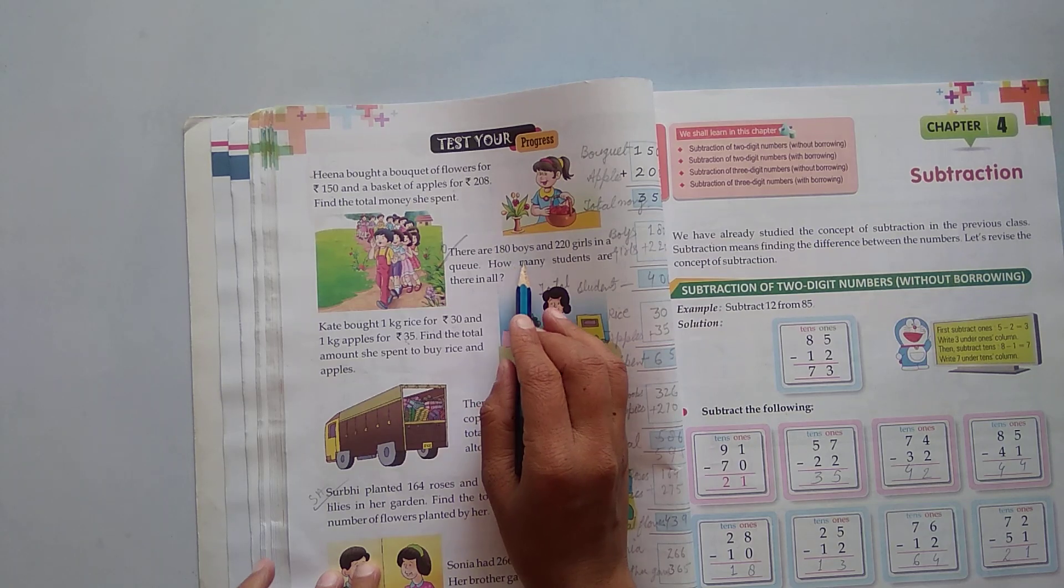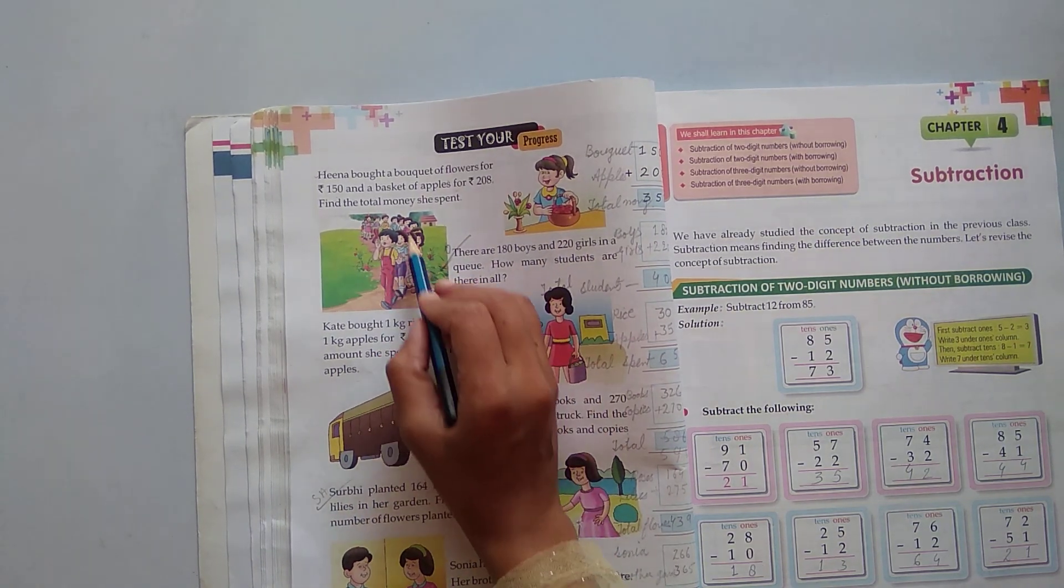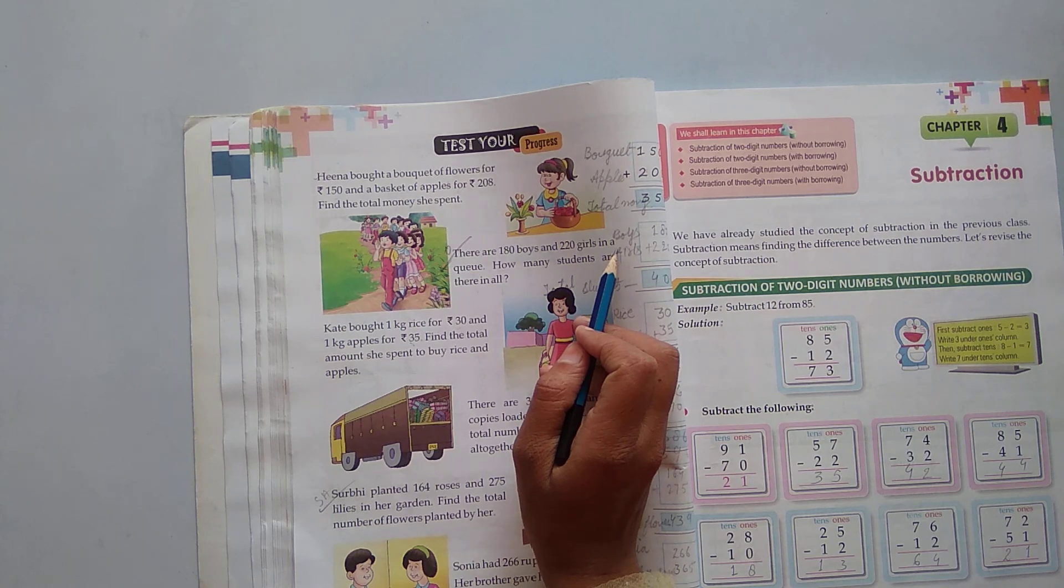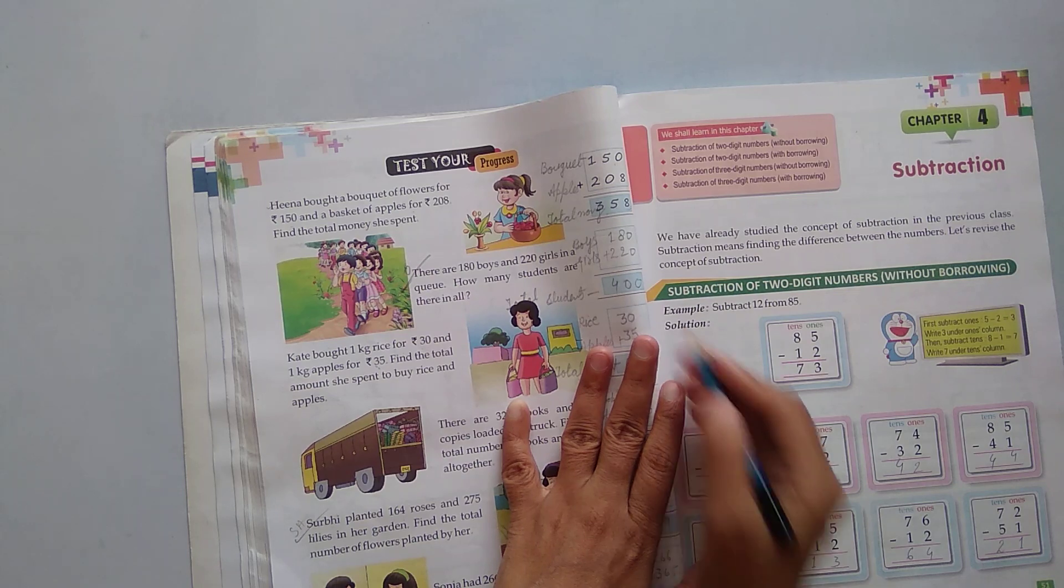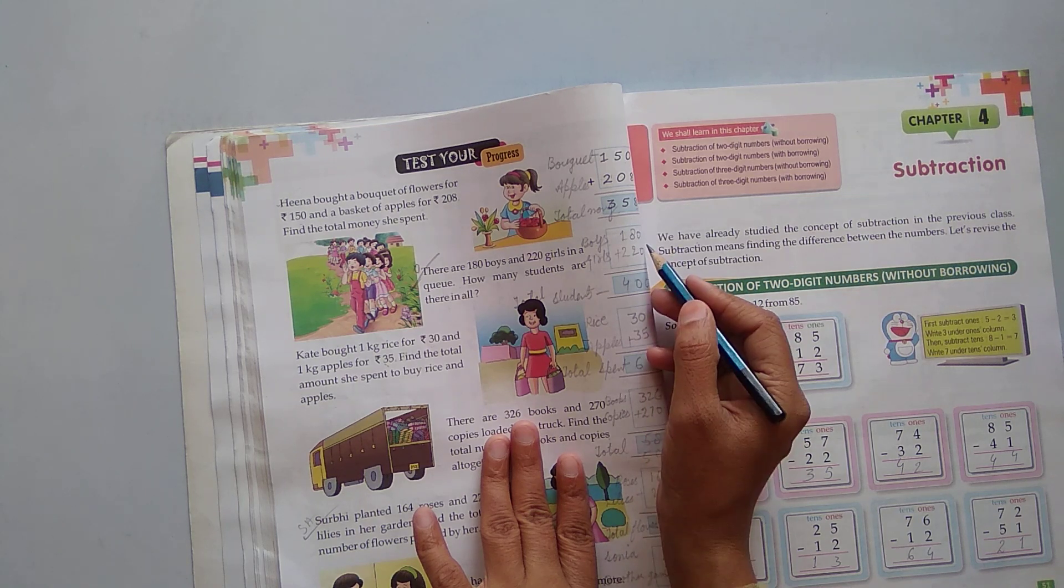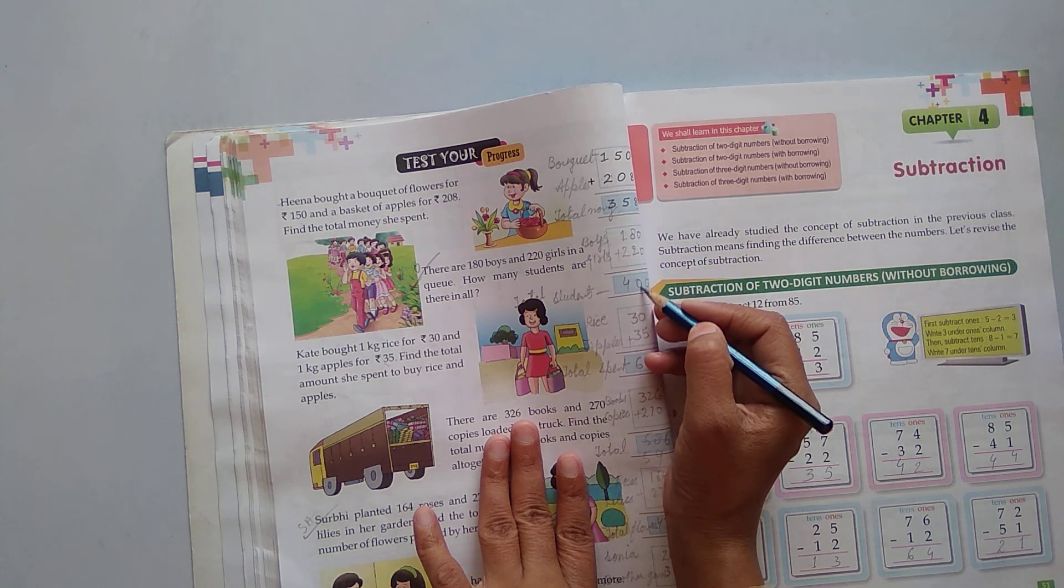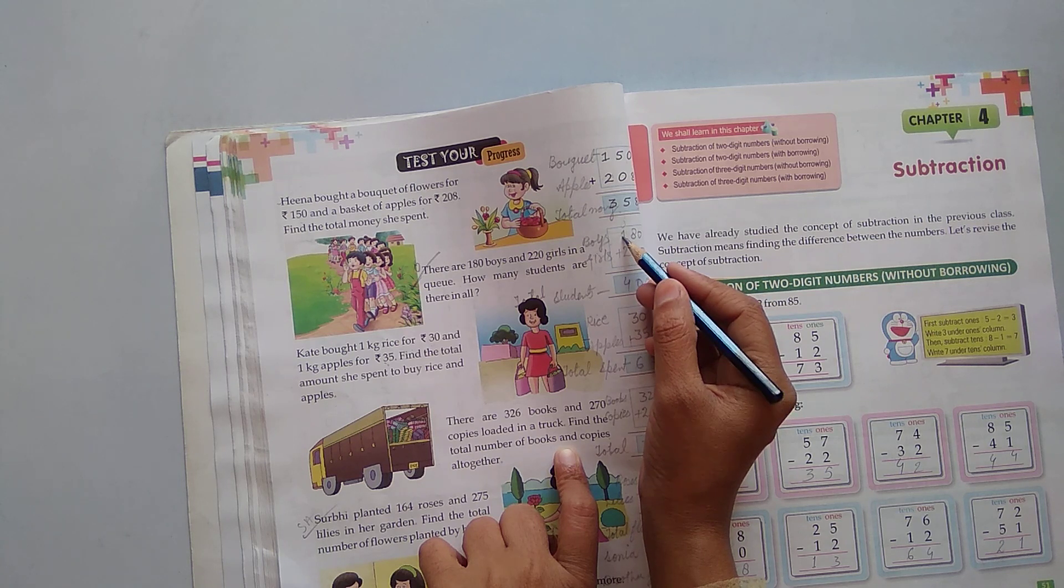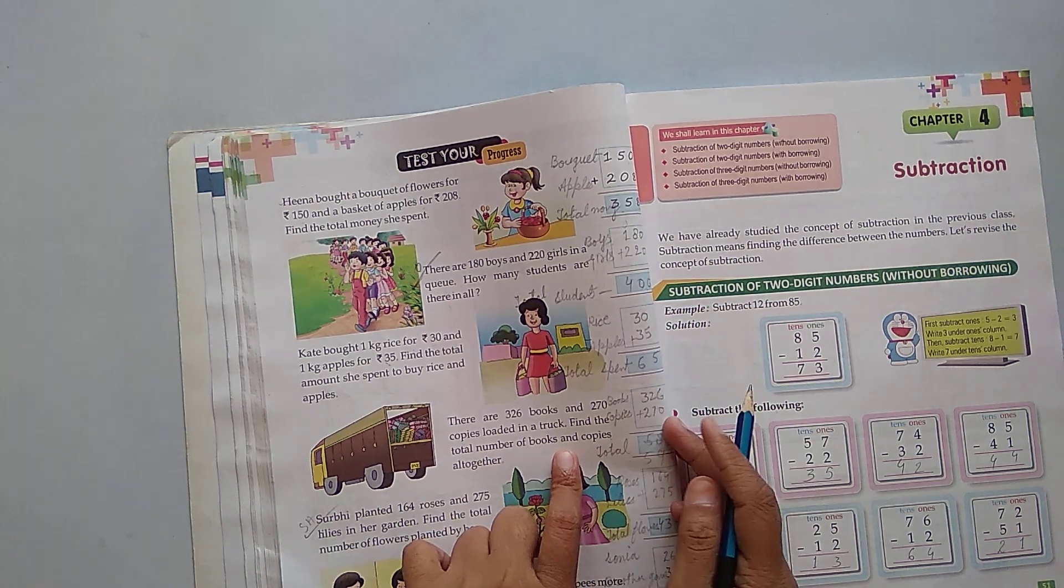Next, there are 180 boys and 222 girls in a queue. How many students are there? 180 boys, 222 girls. Add: 0 and 0, it becomes 0. 8 and 2, it becomes 10, write 0 and give 1 carry. Now add 1 and 2, it becomes 3, and also add carry 1 and it becomes 4. So total is 400.